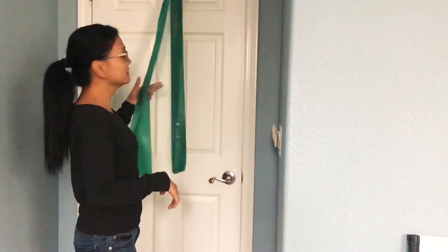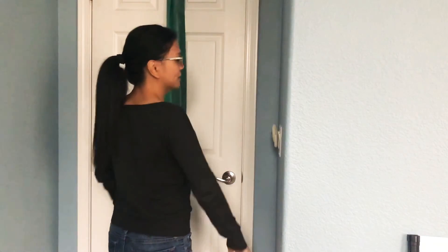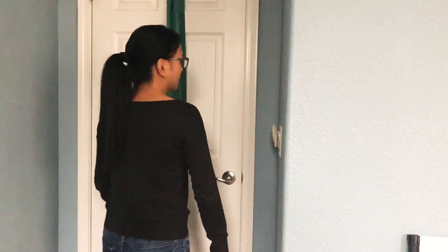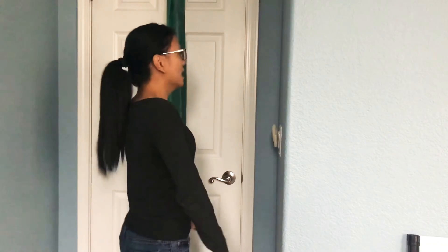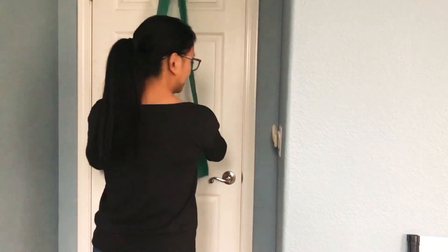A common exercise we give patients after rows, which help the rhomboids and middle trapezius muscles, is pulldowns. This helps retract the shoulder blades and depress them—depress means to pull them down. This works mostly on the latissimus dorsi muscles, the lower trapezius, and some triceps.